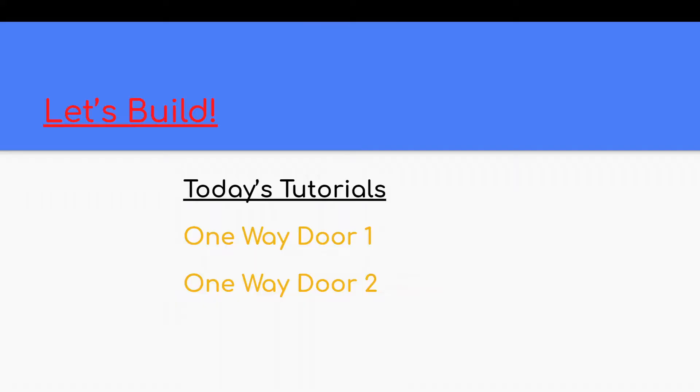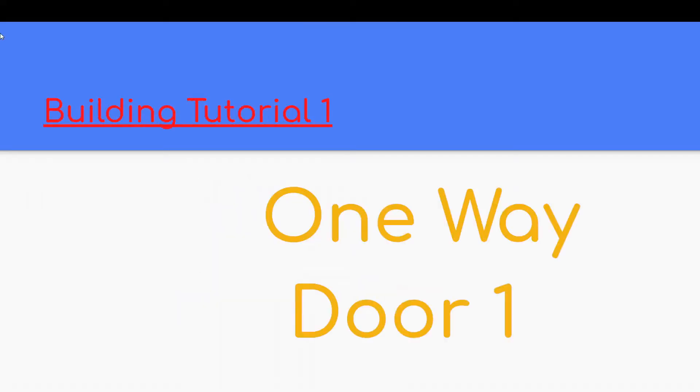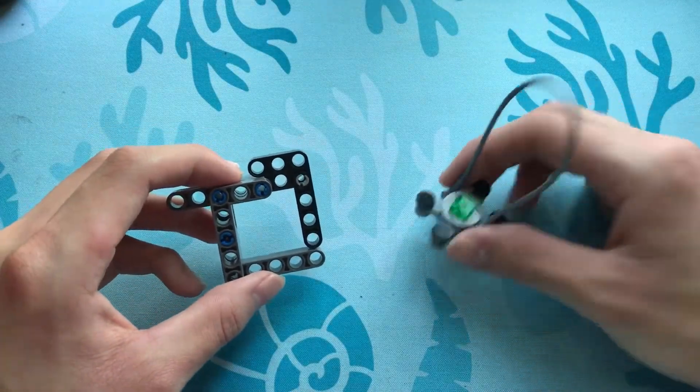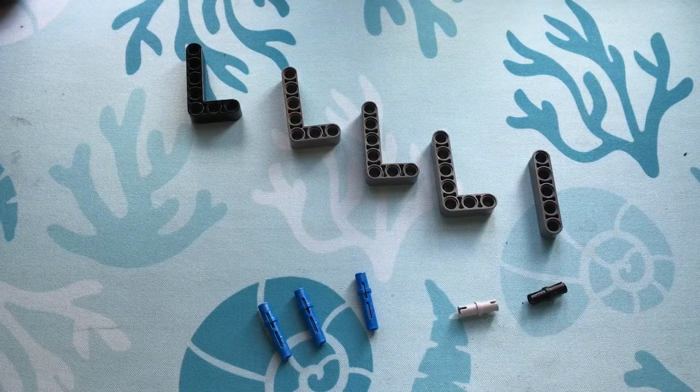Let's build some one-way doors. First, let's build a one-way door that can help you collect objects that have these loops on them. Here are the pieces we'll need.